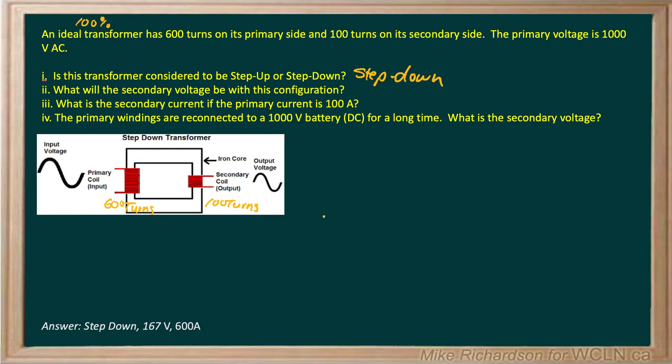What will be the secondary voltage? Well it's a simple matter of a ratio. The number of turns in the primary divided by the number of turns in the secondary is equivalent to the voltage in the primary divided by the voltage in the secondary.